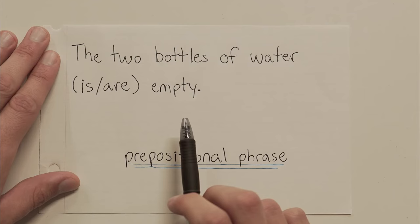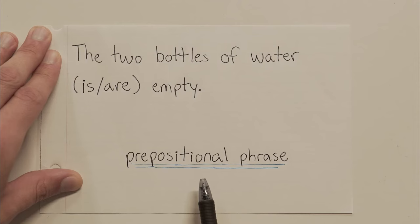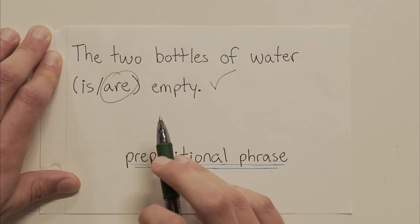Two bottles of water is empty, or two bottles of water are empty. Now, whenever you see an of phrase, of this, of that, that's what we call a prepositional phrase. And prepositional phrases are basically filler. They do not contain the main subject of your sentence. So for me, after years and years of studying this, my brain sort of knows that whenever I see an of phrase, I just sort of forget it. I just kind of pass right over it. So if you do that with this sentence, and you kind of forget about the of water phrase, the sentence actually becomes very easy. Two bottles are empty. So the two bottles of water are empty.